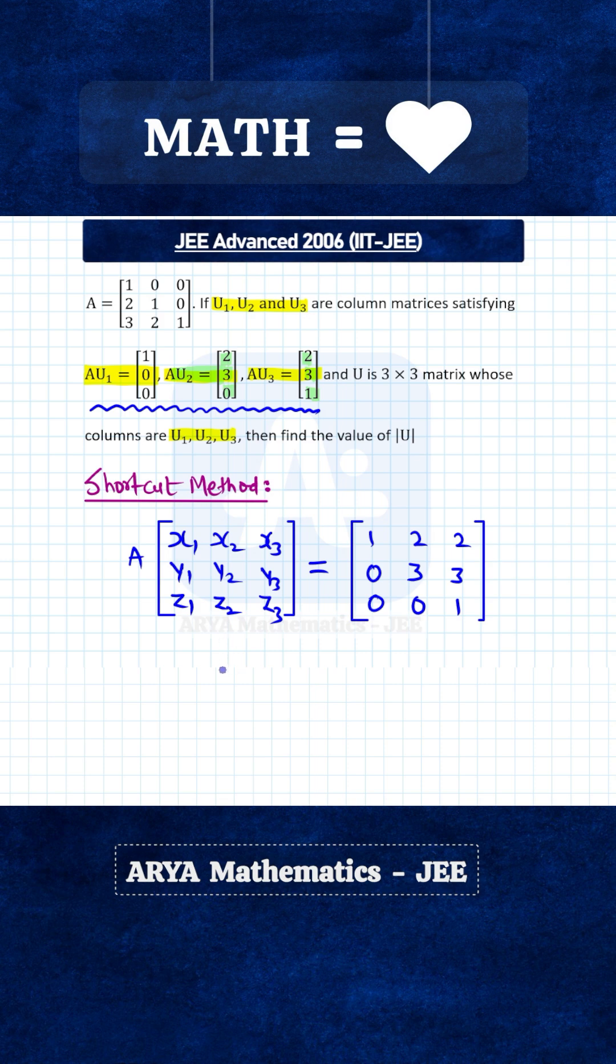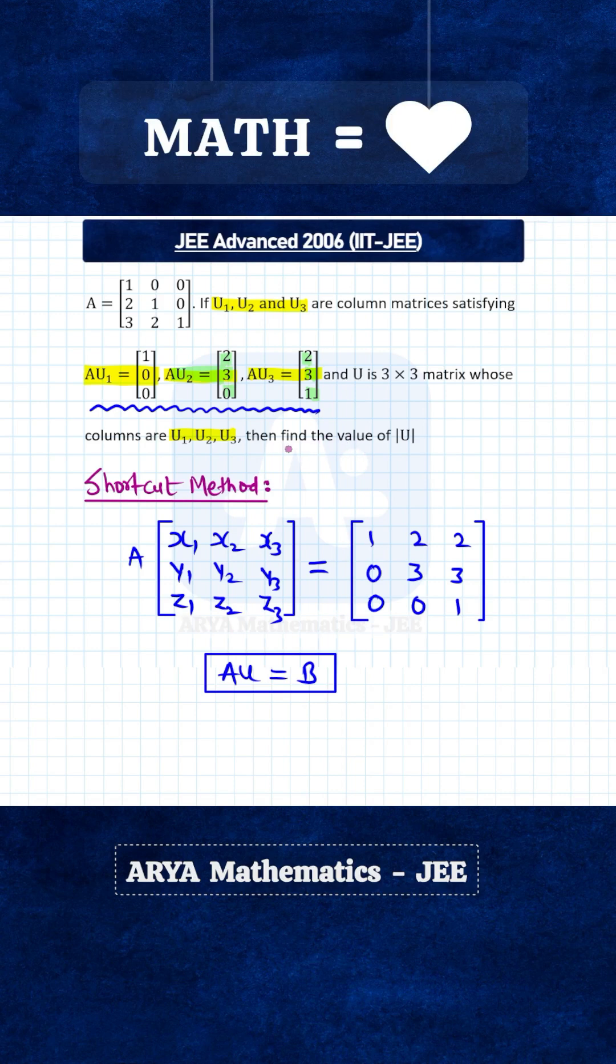Now this is our variable matrix u, so therefore we can write A into matrix u equals to, let us call this matrix on right-hand side as matrix B. Now here the problem is very easy, all we have to do is find the determinant of this matrix u.